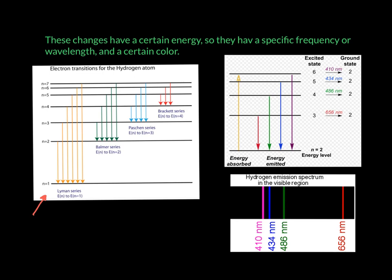This blue one is when they're falling down to the third, or n equal to 3. And the fourth, this red one, is when they're falling down to the fourth. And there are more series. You could give a series where they're falling down to the fifth, et cetera, et cetera.